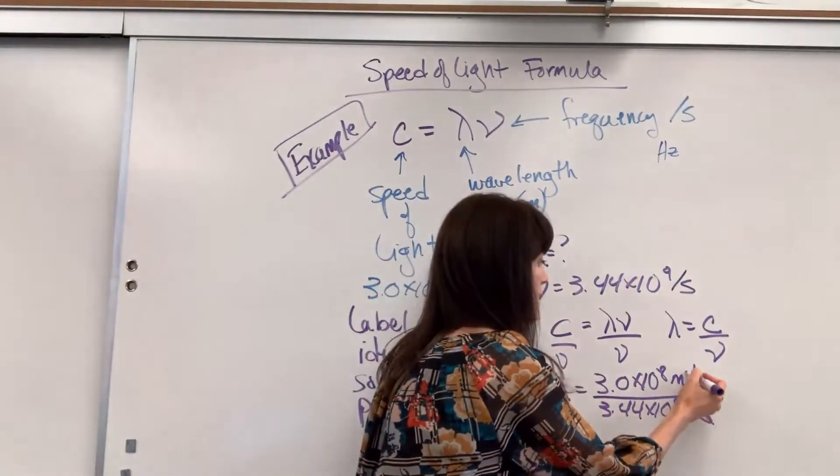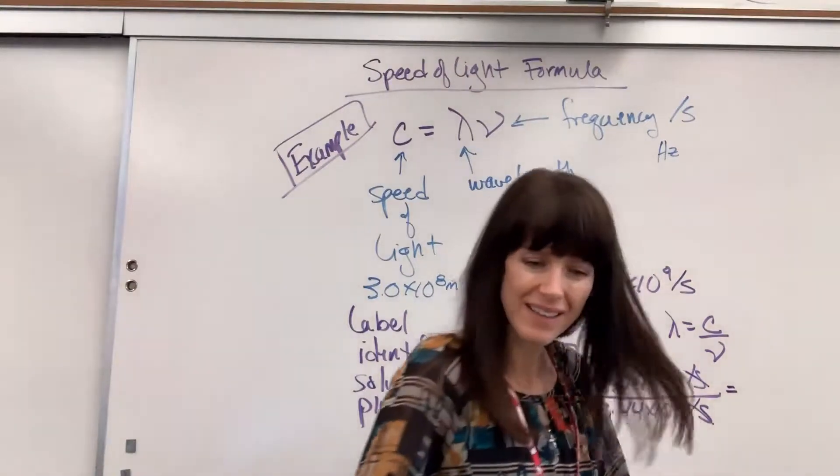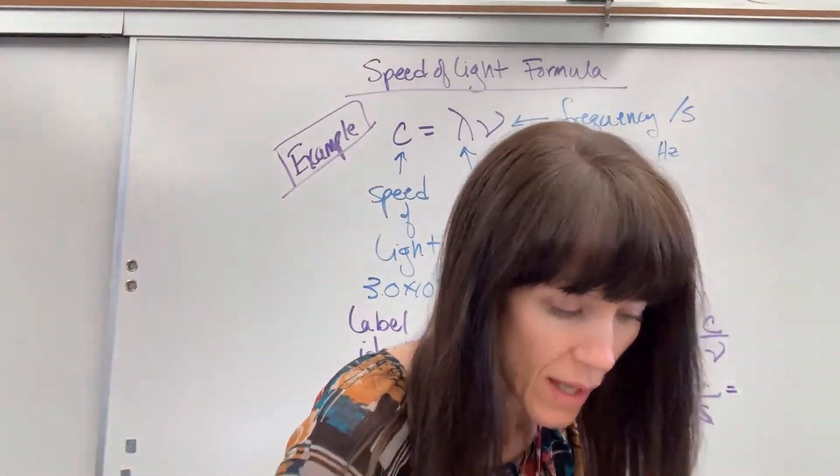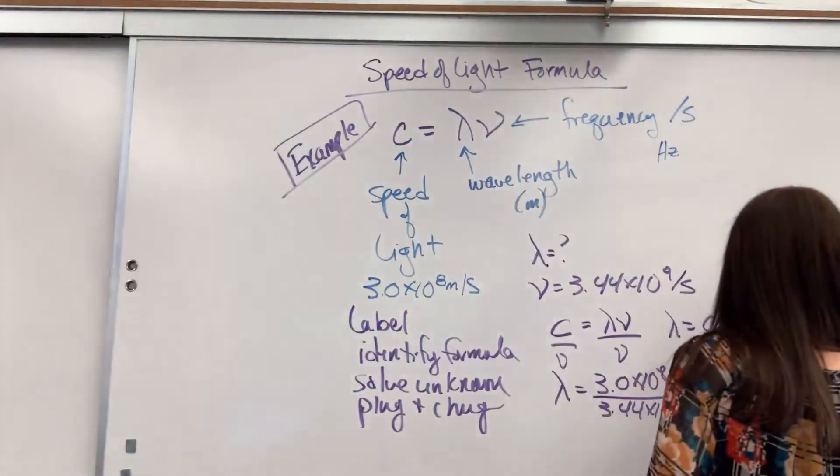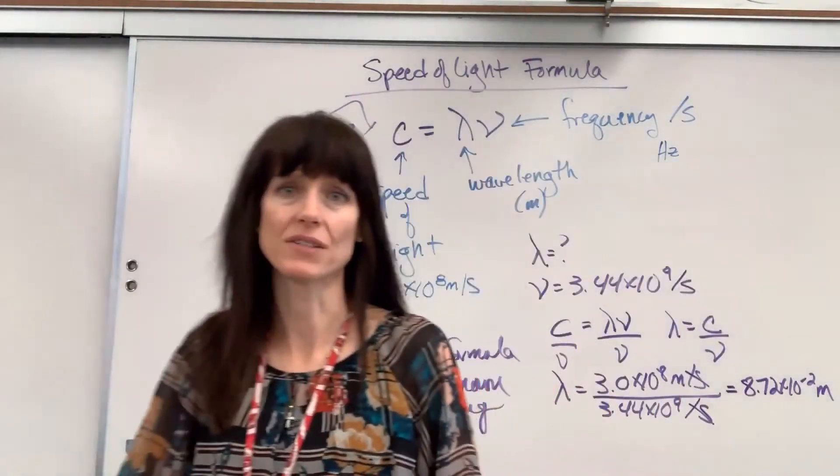The seconds are going to cancel out. We go ahead and do the math. And this wavelength is 8.72 times 10 to the negative 2 meters. There is our answer.